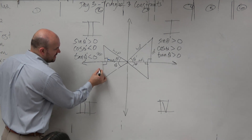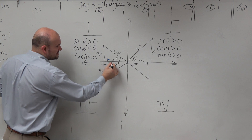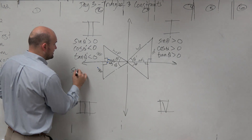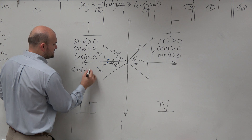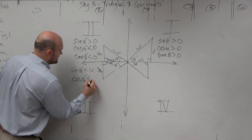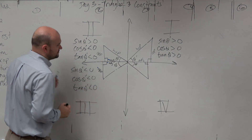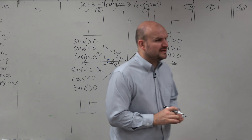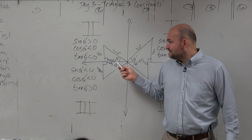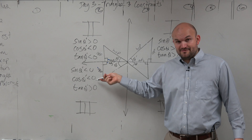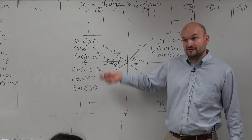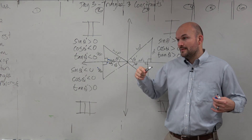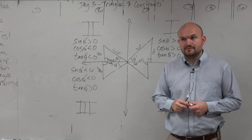Now let's look at the third quadrant. This one has opposite and we have negative adjacent. So we have a negative adjacent and a negative opposite. That makes sine of theta prime less than zero, cosine of theta less than zero. But tangent of theta prime is greater than zero. Why? Because tangent is opposite over adjacent — negative opposite over negative adjacent — a negative over a negative turns positive. So the tangent is positive in the third quadrant.